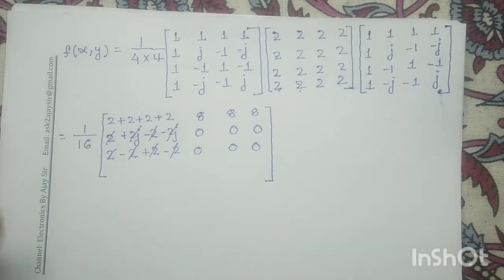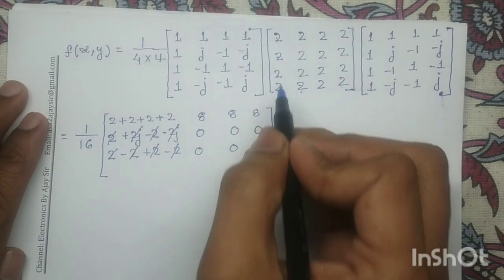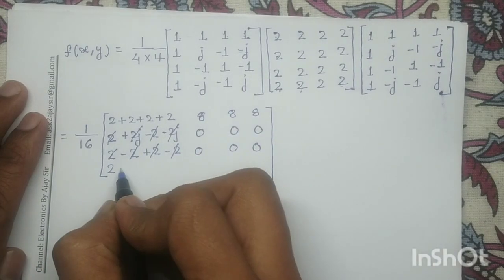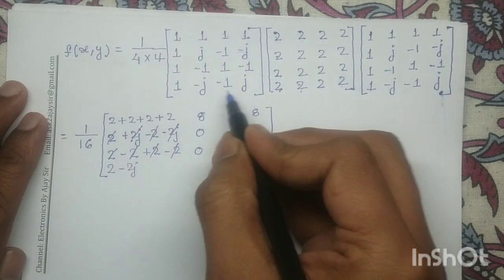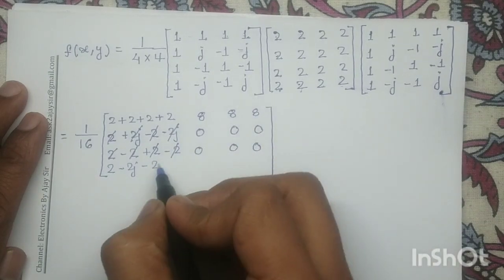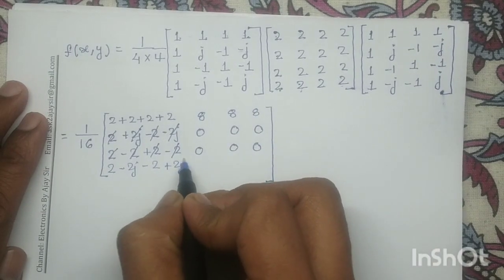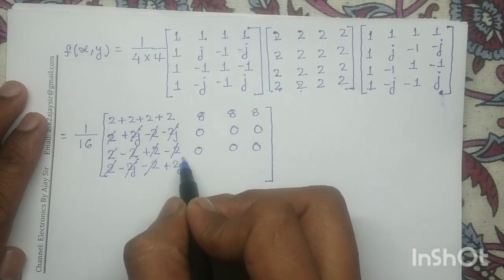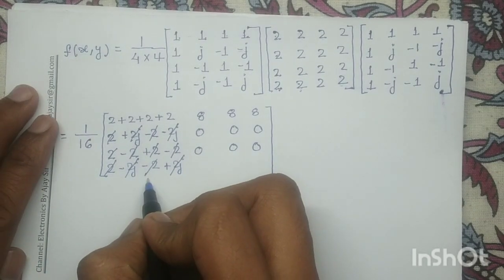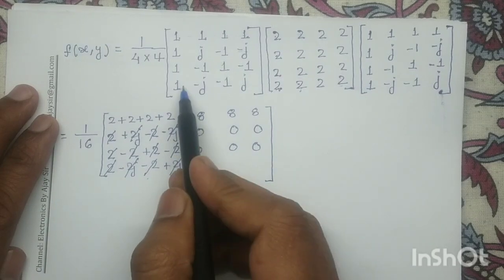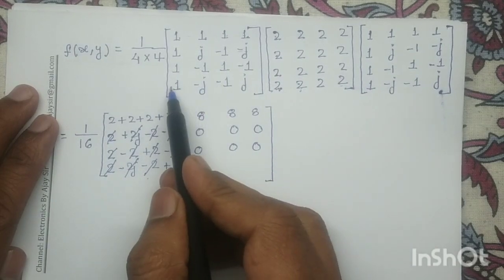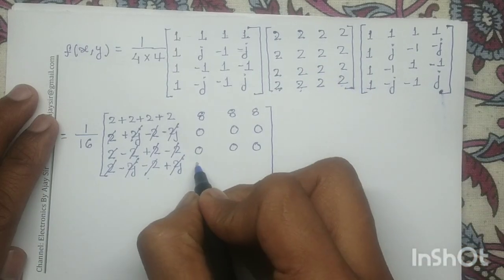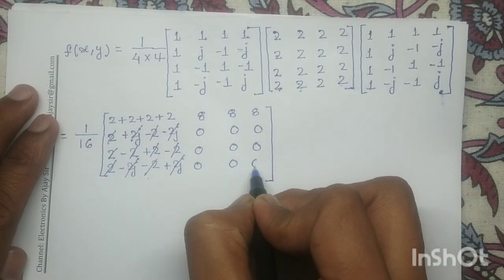For the third row multiplied with the first column: 1×2 = 2, -1×2 = -2, 1×2 = +2, -1×2 = -2, so the result is 0. Similarly, the third row multiplied with the second, third, and fourth columns gives 0, 0, and 0. For the fourth row multiplied with the first column: 2 - 2j - 2 + 2j = 0. When the fourth row is multiplied with the second, third, and fourth columns, the result is also 0, 0, and 0.